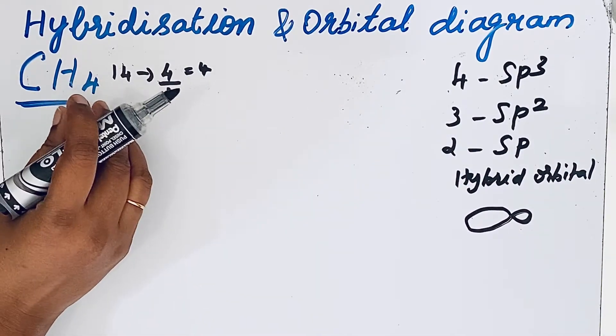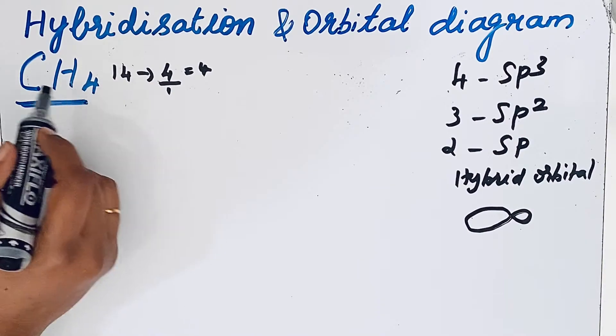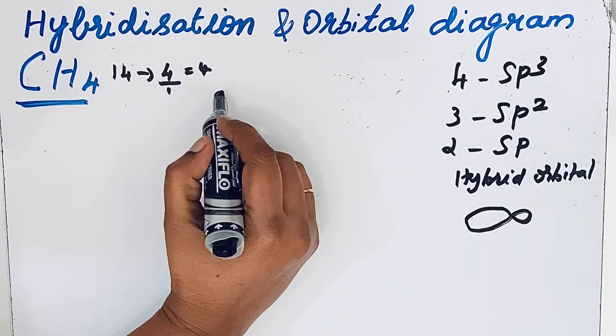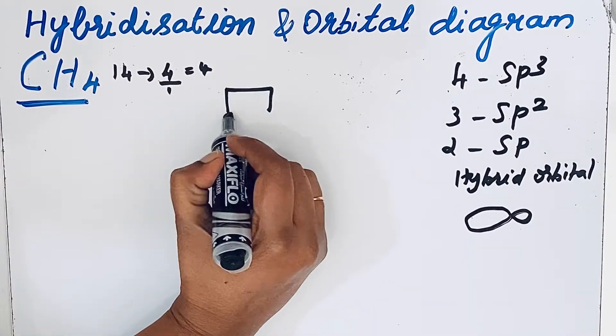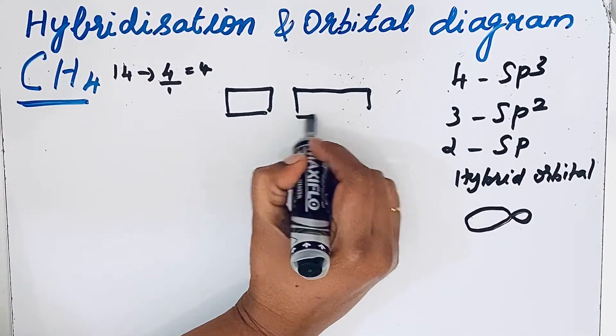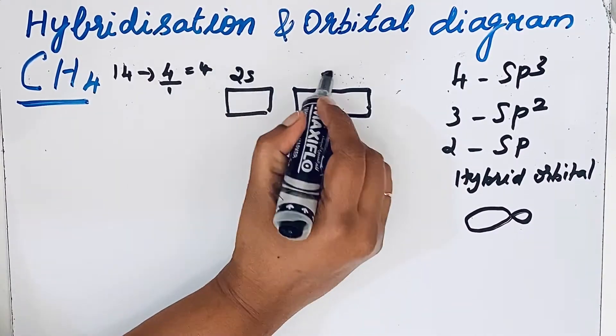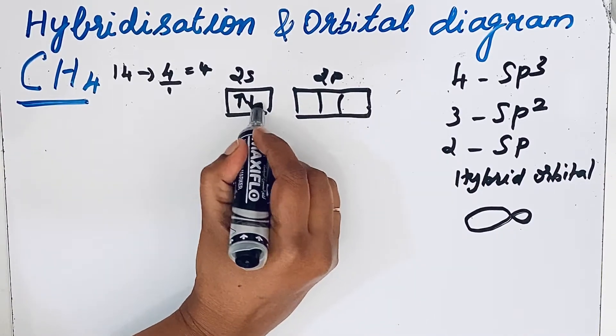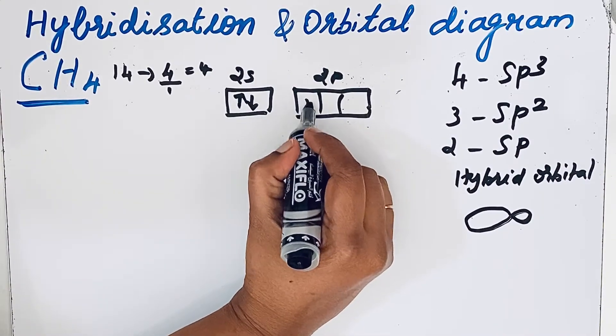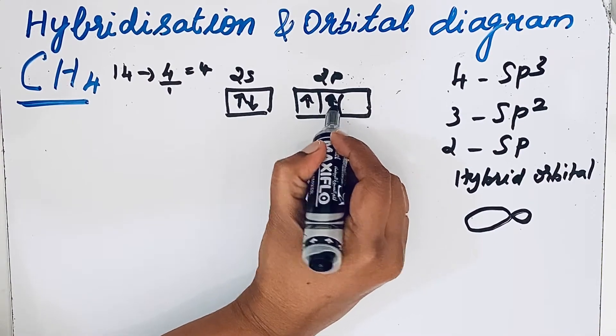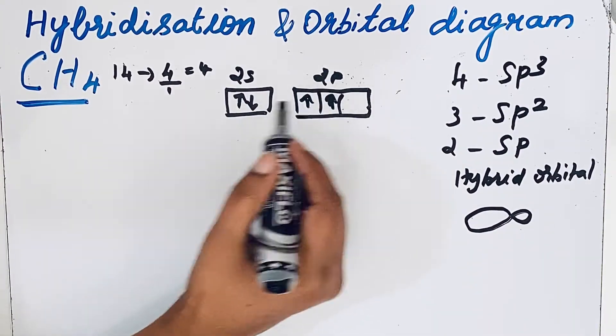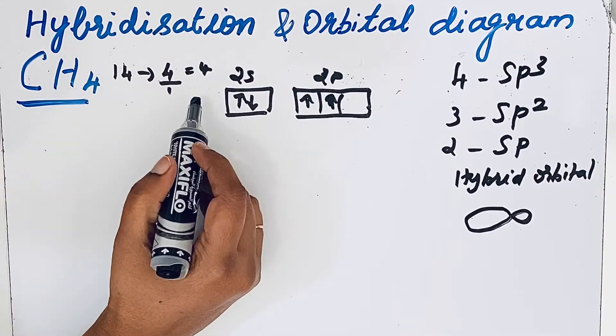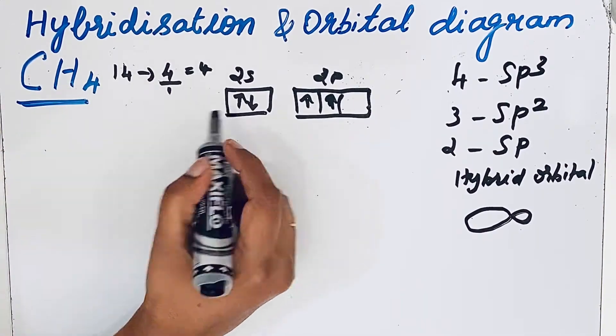First let us draw the electronic configuration for carbon. There are sp orbitals present in this 2s and 2p. In 2s orbital, 2 electrons and then 2 unpaired electrons in 2p orbitals because 4 valence electrons for carbon. So this is ground state.